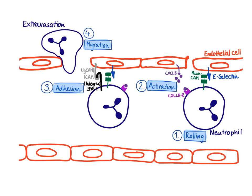Integrins are very sticky molecules that allow a very tight interaction between the neutrophil and the endothelial cell. There's always an interaction between an integrin and a so-called IgCAM. IgCAM is a family of molecules, and the specific molecule expressed on endothelial cells is ICAM. There's an interaction between LFA-1 and ICAM — very tight — and this allows the neutrophil to migrate into the tissue.